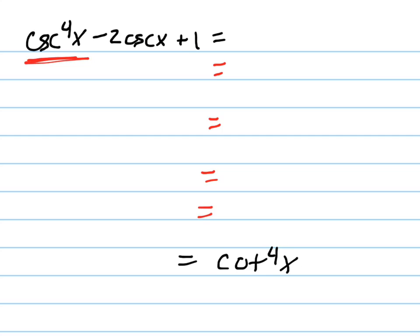Well, first of all, notice that I want to turn it into a cotangent. So I'm going to look for a Pythagorean identity that relates cosecant to cotangent, and there is one. If you look at your sheet, it is cotangent squared x equals cosecant squared x minus 1, which means cosecant squared x equals cotangent squared x plus 1.